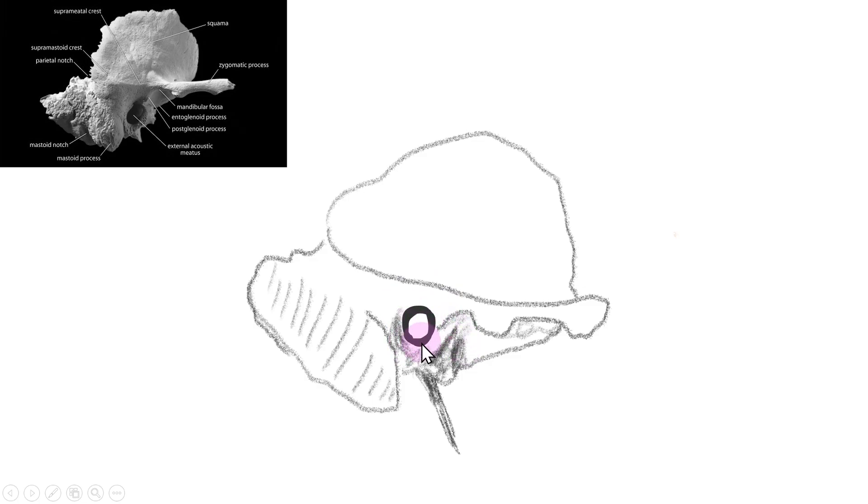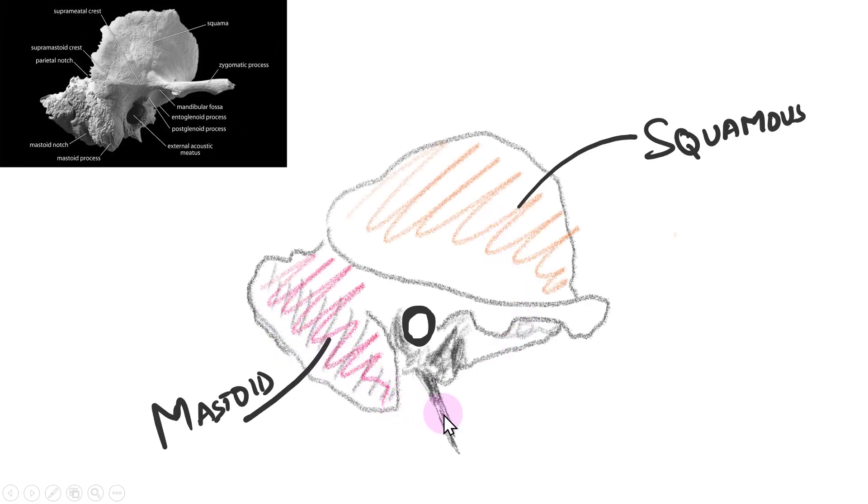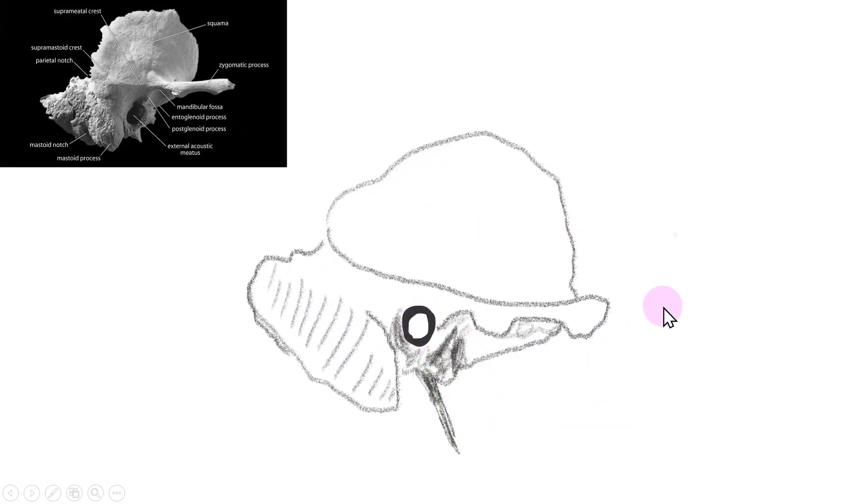The external auditory meatus is shown in black, which is an important landmark. You can see the squamous part, the mastoid part, the styloid, and the tympanic parts above and posterior to the external auditory meatus.